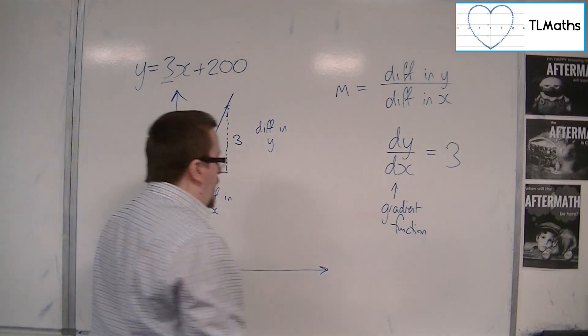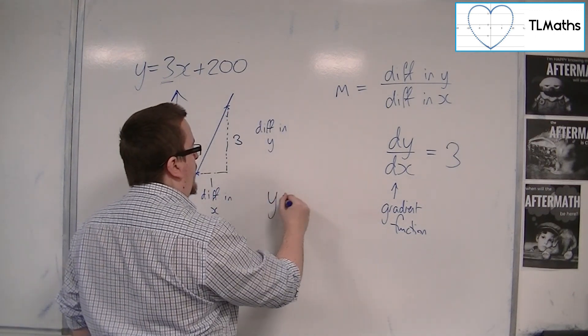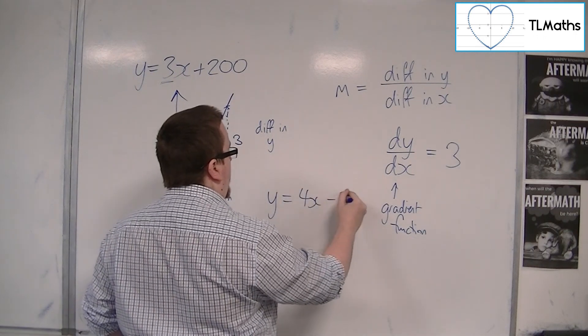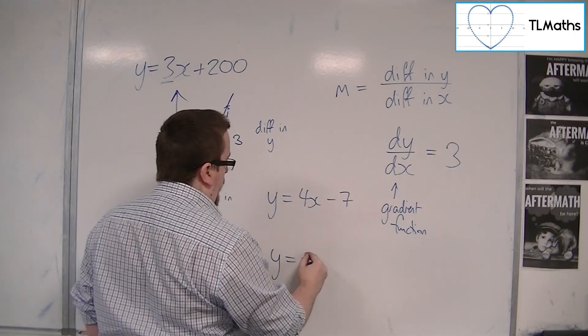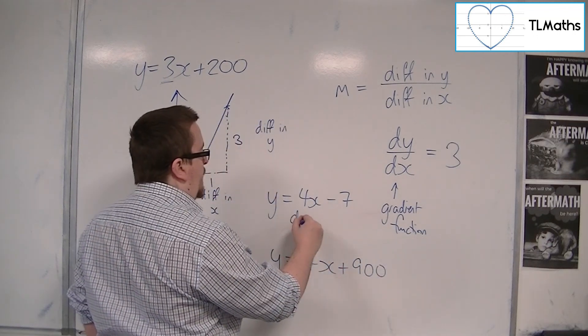So if I write down two equations, like y is equal to 4x minus 7 and y is equal to 4x plus 900, in both of these cases.